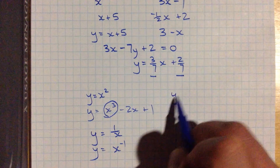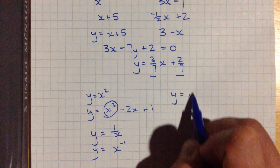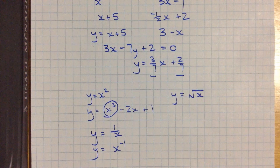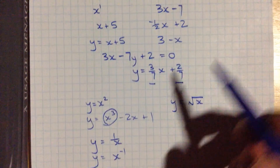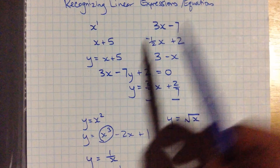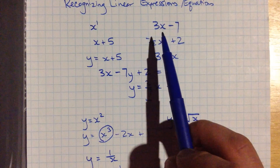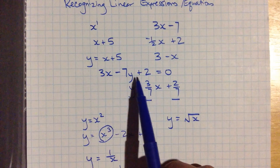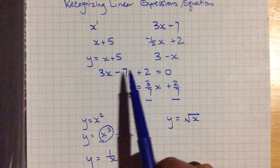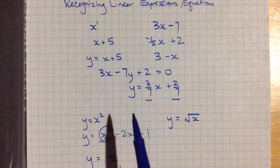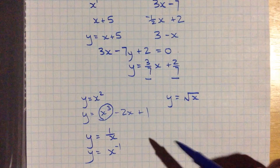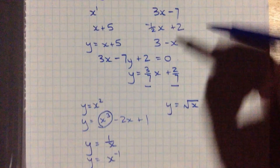How about this one: y equals square root of x? That's not a straight line either. So anything that doesn't satisfy this form — with a variable, or maybe two variables, that have degree 1, or an exponent of 1 on them — these are the things that are linear. Anything else is not linear.